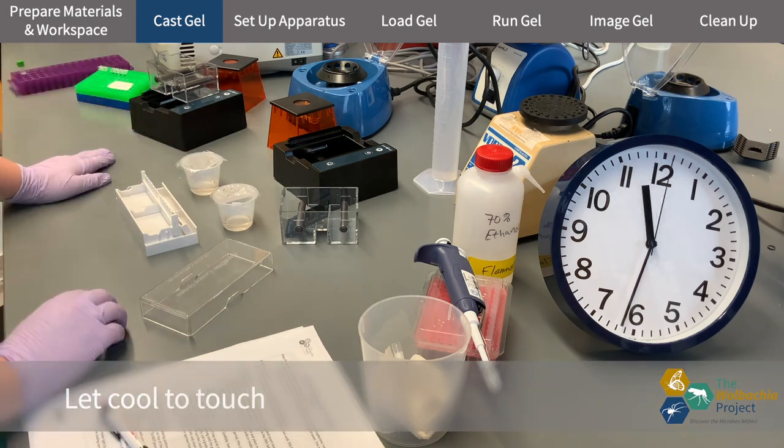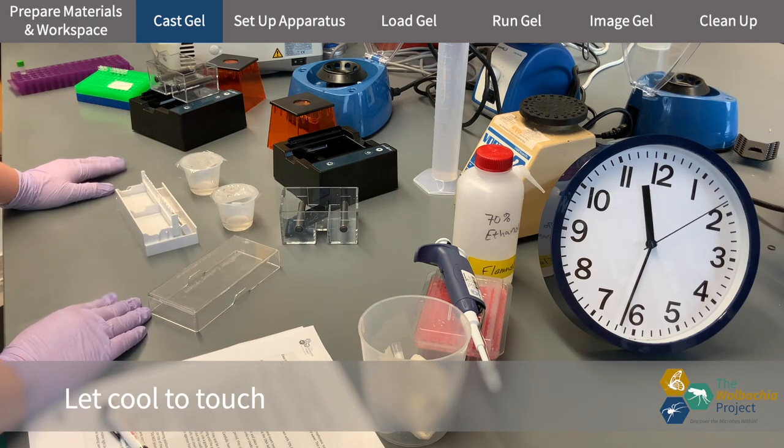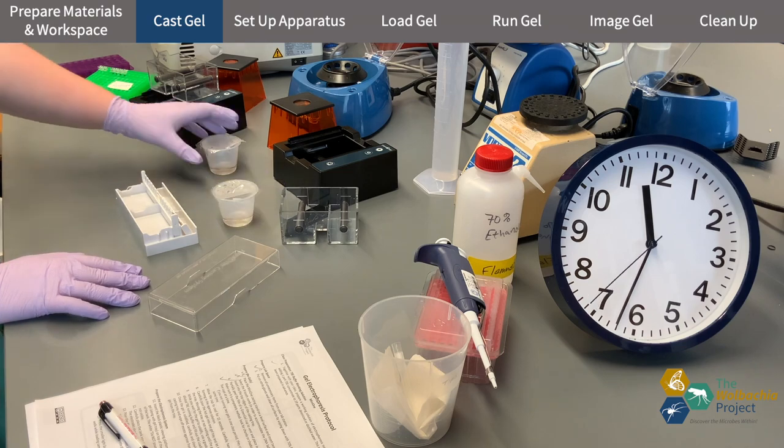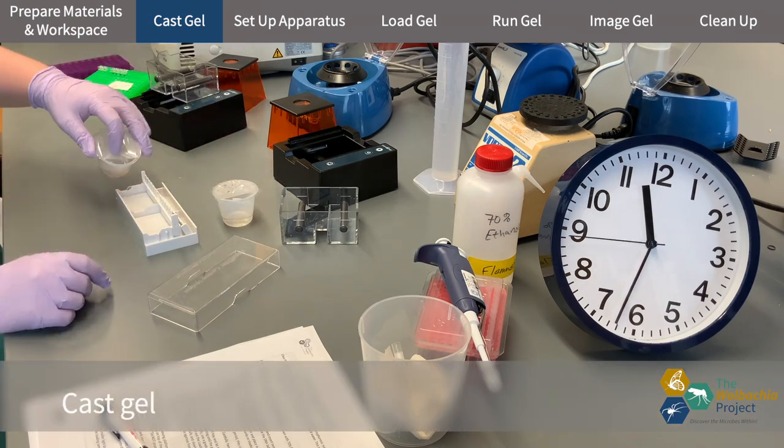I don't want to pour the molten agarose while it is still too hot so I take the time and wait until the agarose cools down. It should be warm but not hot. Then I pour the gel into the casting tray I've previously set up.